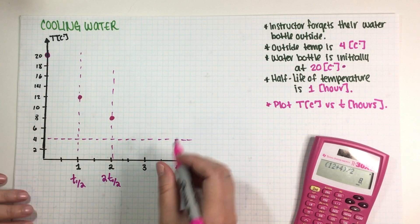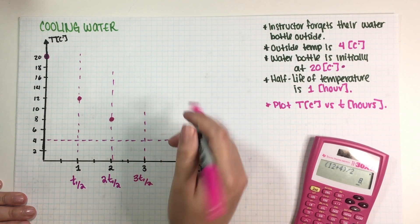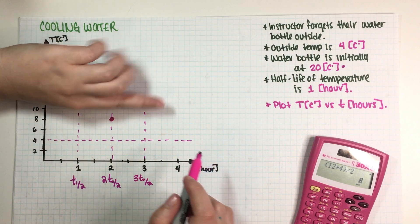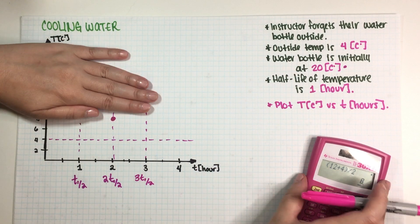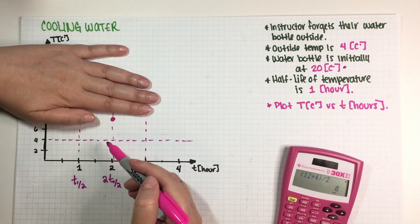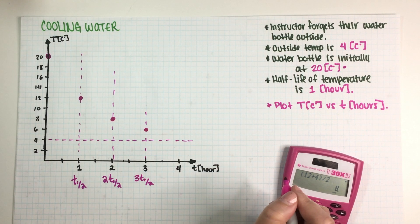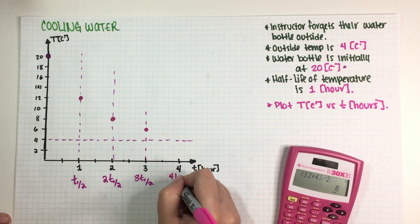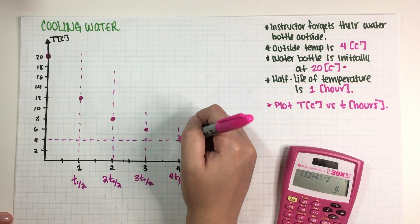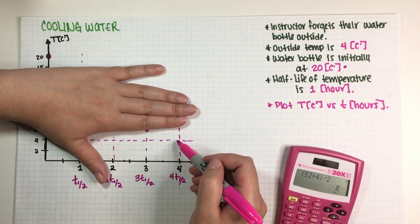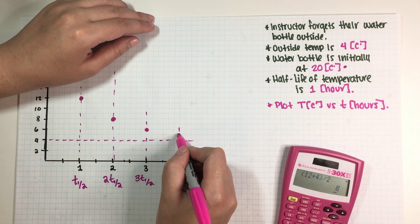So over here, so this is where our graph is going to be. Now this is the third half-life, and the third half-life by definition is the middle point between the second half-life and the final value. So this is the middle point between 8 and 4, so that would be equal to 6. And then this is the fourth half-life, and as you can probably guess at this point, this is the middle point between the third half-life and the final value. So this is the middle point between 6 and 4, so it's equal to 5.